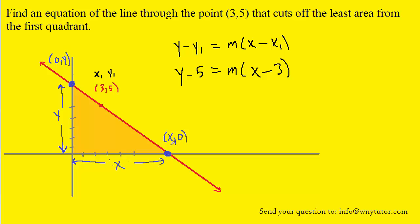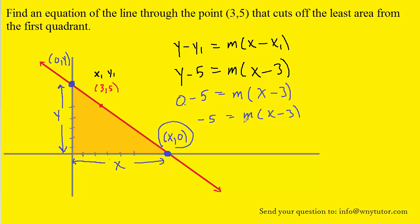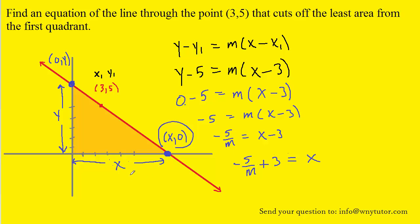We can work with those intercepts. For the x-intercept, we plug 0 in for the y-coordinate and x in for the x-coordinate. We simplify the left side by subtracting 0 by 5, then divide both sides by m, and finally add 3 to both sides. So the value of x can be represented as negative 5 over m plus 3. Let's replace this x with that expression.